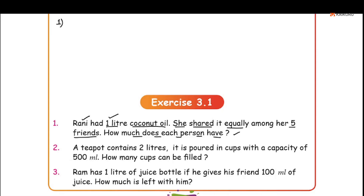Solution of question number 1: Rani had — the volume of coconut oil Rani has is 1 liter. Rani had is equal to 1 liter. Now, to make the calculation easier, we convert liters to milliliters. 1 liter is equal to 1000 milliliters. So Rani had 1000 ml of coconut oil.